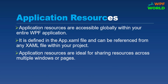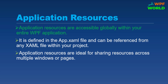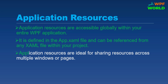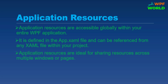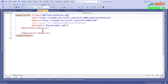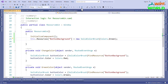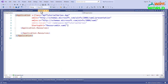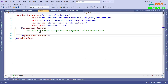What are application resources? Application resources are accessible globally within your entire WPF application. They are defined in the App.xaml file and can be referenced from any XAML file within your project. Application resources are ideal for sharing resources across multiple windows or pages. Let's see with an example of how to define application resources. To define application resources, we have to set the resources in App.xaml, and inside Application.Resources we will set the resources just as we set them in Window.Resources.